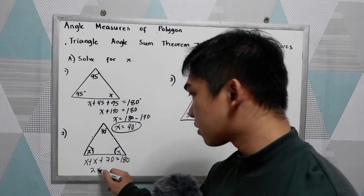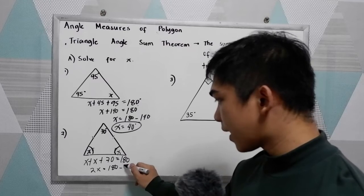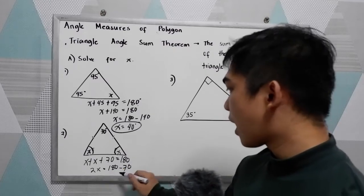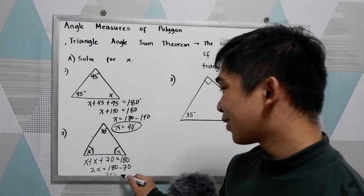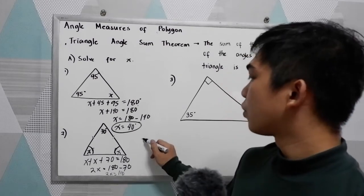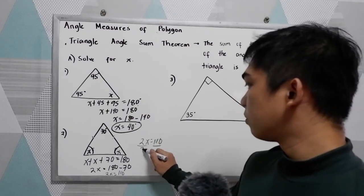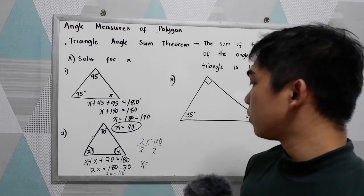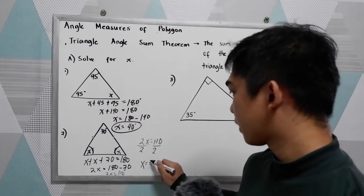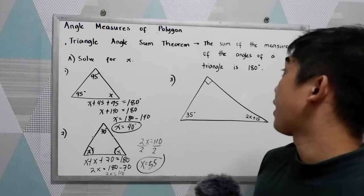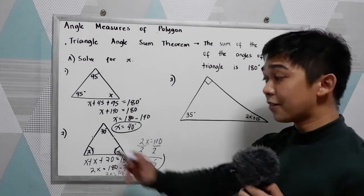Now we have x plus x plus 70 is equal to 180, so 2x plus 70 equals 180. Move positive 70 to the right — that becomes negative 70. So 2x is equal to 180 minus 70, which is 110. Divide by 2: x is equal to 55. Let us check: 55 plus 55 is 110, plus 70 is 180.